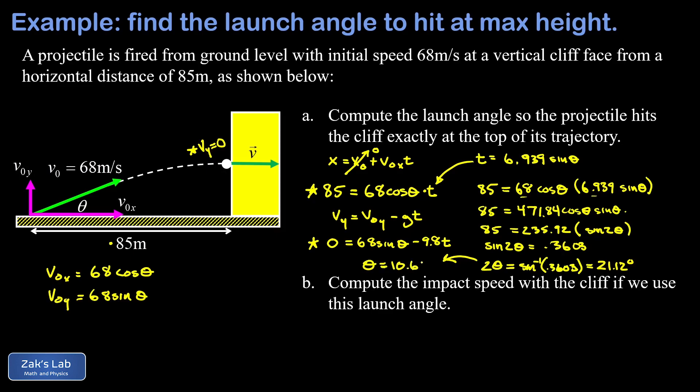Now the follow-up question in part b is actually really simple by comparison. We're asked to find the impact speed with the cliff if we use this launch angle. And because the impact is totally horizontal at the top of the trajectory here, our final velocity at the impact, just showing this as a vector, is the same as the initial x velocity vector because the y component of the motion is zero at that point.